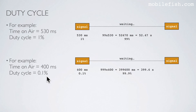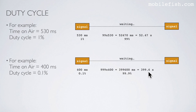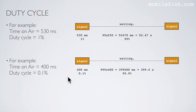Here's another example: time on air is 400 milliseconds and the duty cycle is 0.1%. So 400 milliseconds represents 0.1%, meaning 999 times this time on air equals 399.6 seconds. After you have sent this signal, you have to wait 399.6 seconds before you can send the same signal again. So why is this duty cycle rule set? If there were no duty cycle, then anyone could broadcast for unlimited time, which renders the usage of the ISM band completely unusable.